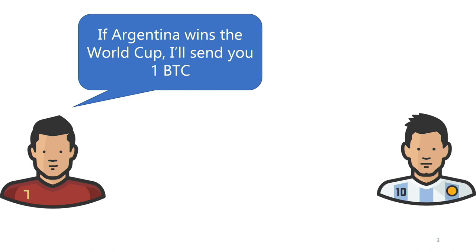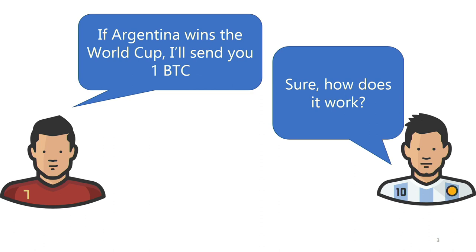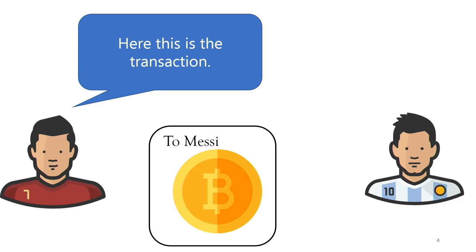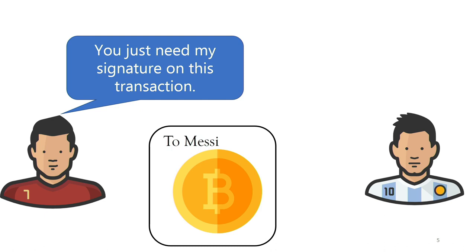Ronaldo says: 'Hey, if Argentina wins the World Cup, I'm going to send you one Bitcoin.' And Messi is like, 'Okay cool, how does this work?' Basically, a transaction is just a coin owned by Ronaldo, and to spend the coin he needs to specify the recipient — Messi — and also include a signature. If this transaction with the signature is posted to the Bitcoin blockchain, the transfer is complete.